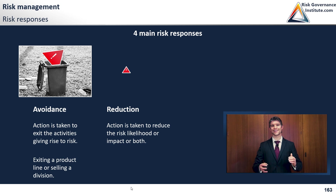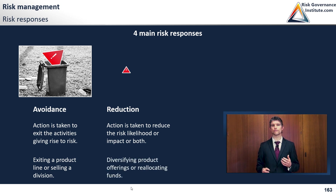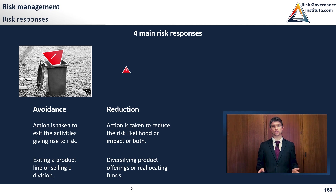Reduction is where you're taking actions — putting in place controls — to reduce the risk likelihood, impact, or both. This is pretty common and there are many different examples. Diversifying product offerings, relocating funds — there are many different types of things you can do to reduce a risk. Most control activities in most processes are used to reduce a risk rather than something else.